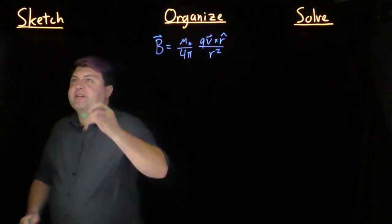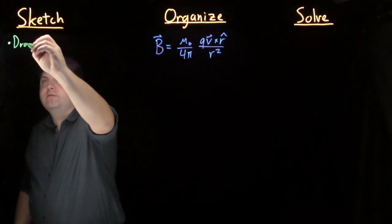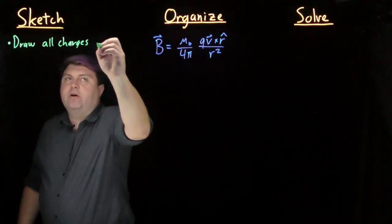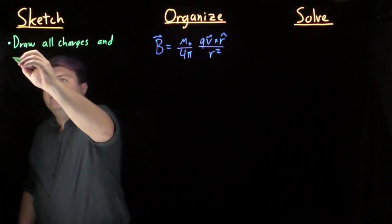So our first step is our sketch step, and as we start the sketch step we want to draw all the charges and include their velocity vectors.